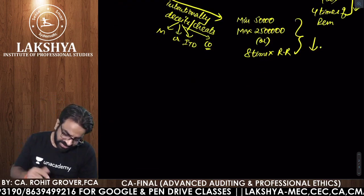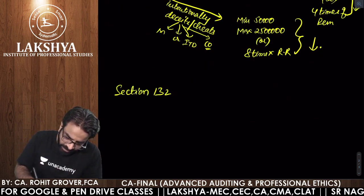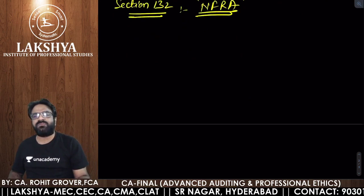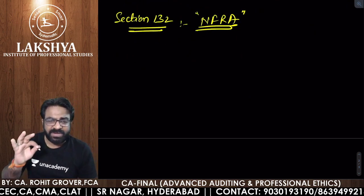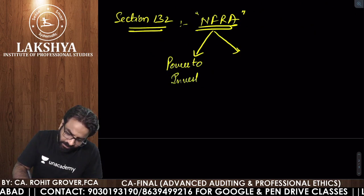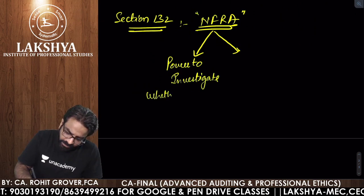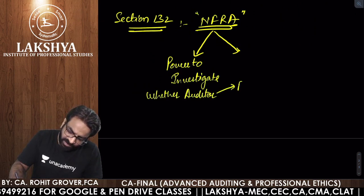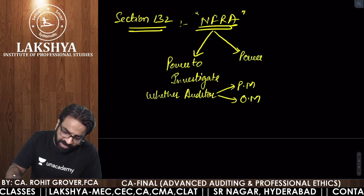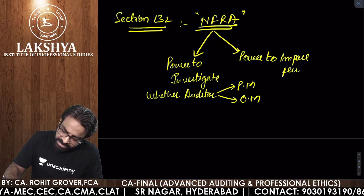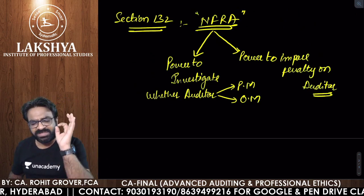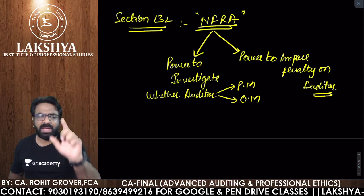The next section is Section 132 — NFRA, the National Financial Reporting Authority. NFRA has the power to investigate whether the auditor is guilty of professional misconduct or other misconduct, and if proved, NFRA has the power to impose a penalty on the auditor. These are the two specific powers we already discussed under Section 132.